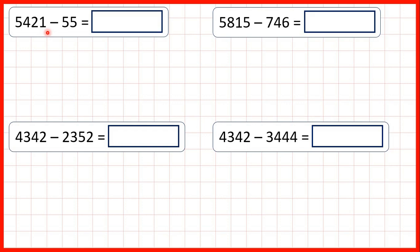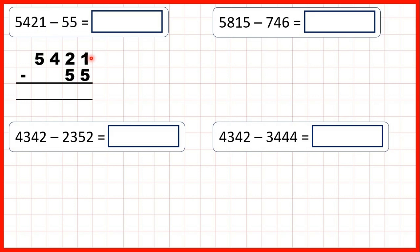We need to subtract using column subtraction. First, we have 5421 minus 55. So we can set the question out with the digits lined up on the right hand side. Because if we have whole numbers and we line up the digits on the right hand side, then our 1s, 10s, 100s and 1000s place value columns will be lined up as well.